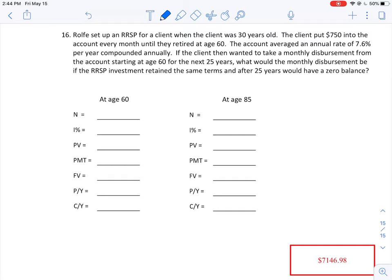He puts $750 into the account every month until they retire at age 60. So the payment is $750 and it's negative because it's a cash flow out of your account. We're building an investment account for 30 years times 12 times a year, so that's a total of 360 periods in this investment cycle.